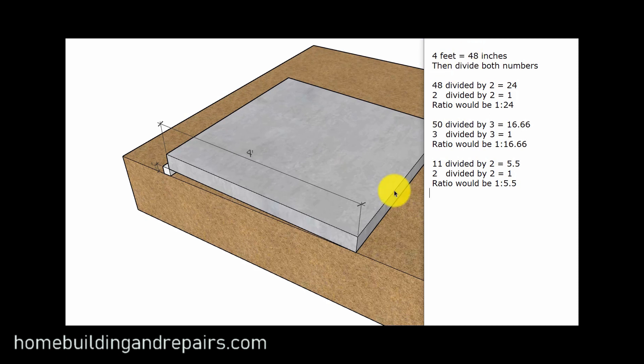So we are going to take four feet and convert it into inches. There are 12 inches in a foot. We're going to multiply four times 12, which gives us 48.